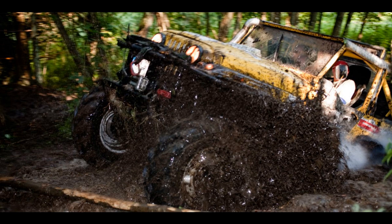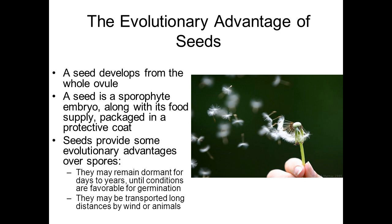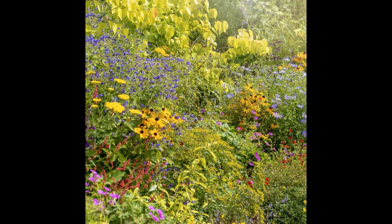Seed dispersal is important and plays a major role in the maintenance of species and diversity in the environment. Dispersal of seeds away from the parent organism maintains biodiversity in the natural ecosystem. Seed dispersal is also essential in allowing the migration of flowering plants from one place to another, which can be influenced by the production of different types of fruits.